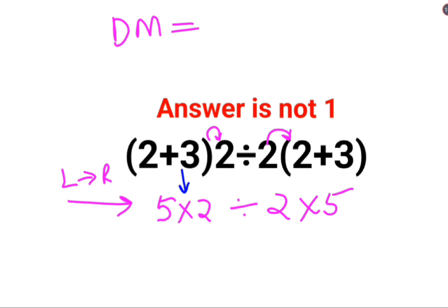So 5 multiplied by 2 is 10 divided by 2 multiplied by 5. The next operation which happens first on your left-hand side is supposed to be division, so 10 divided by 2 is 5 multiplied by 5.